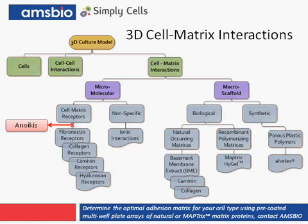These cell-matrix interactions are cell-specific, so you have to determine the optimal matrix for your cell type. To do this, you can use multi-well plates that are pre-coated with an array of different matrices. When there is a loss of normal cell-matrix interaction, the cell may undergo anoikis — a form of programmed cell death or apoptosis. At the macro level, the 3D matrix provides physical support of complex multicellular structures. This support can be biological in nature, as in the case with basement membrane extract that forms a gel at 37 degrees, or it can be recombinant in nature in the form of hydrogels. Alternatively, the physical support can be synthetic — we'll look later at a porous plastic scaffold called Alvatex.